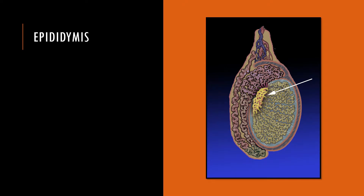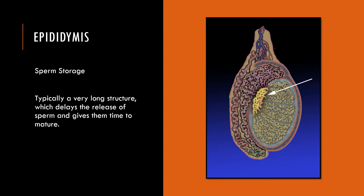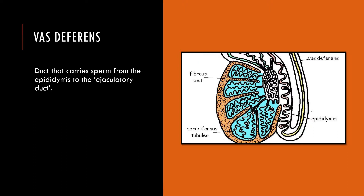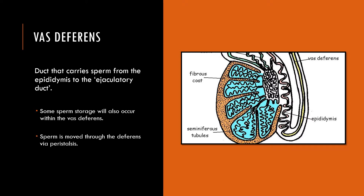Once sperm have been produced in the testes and nourished by the Sertoli cells, sperm gets stored in the epididymis, which delays the release of sperm to give them time to mature. The next portion of the male reproductive system is the vas deferens — the duct that carries sperm from the epididymis to be ejaculated through the ejaculatory duct. The vas deferens moves sperm via peristalsis, which is rhythmic muscle contractions, to the ejaculatory duct.